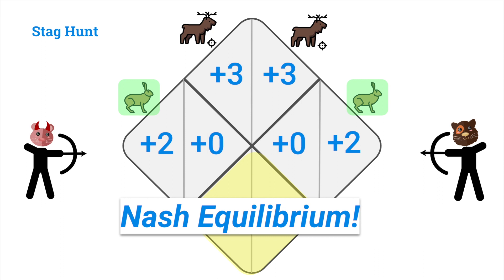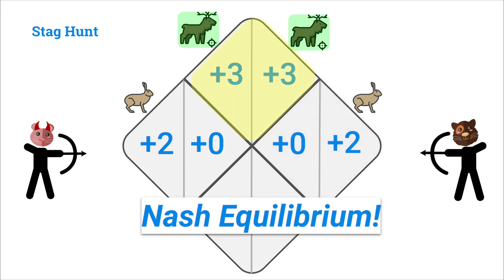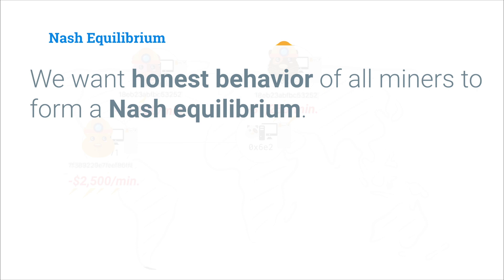As long as the other player doesn't switch their strategy, you have no incentive to switch yours. We can also look at the case where Bob and Mallory have both agreed to hunt the stag together. If Mallory switches and hunts the hare instead, she goes from three units of meat to two — so she won't do that. If Bob switches to hares, he also decreases his meat by one unit. So we have another Nash equilibrium where neither player can improve their payoff by switching strategies as long as the other player continues to hunt the stag with them.